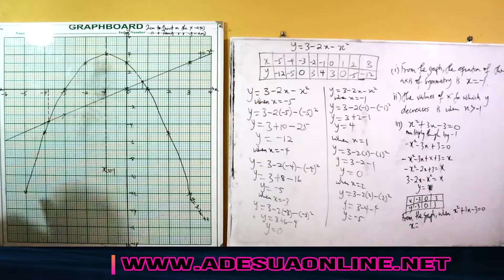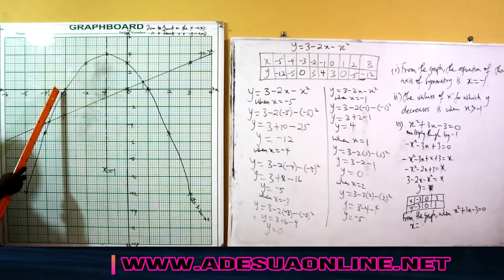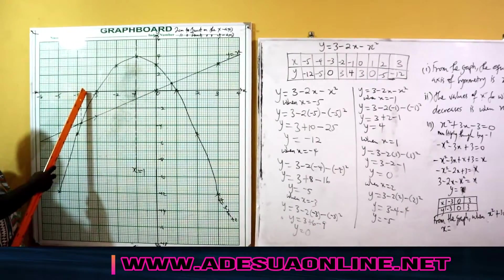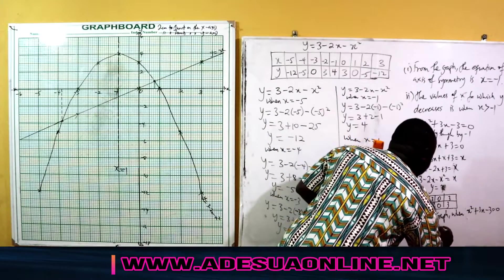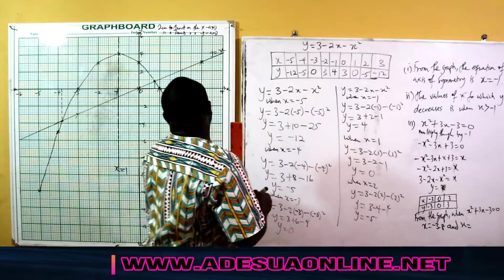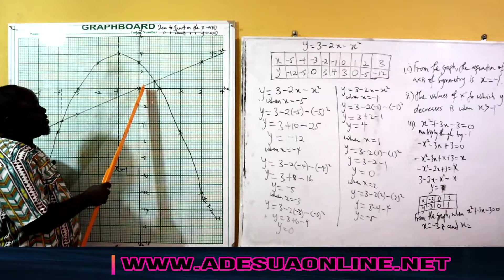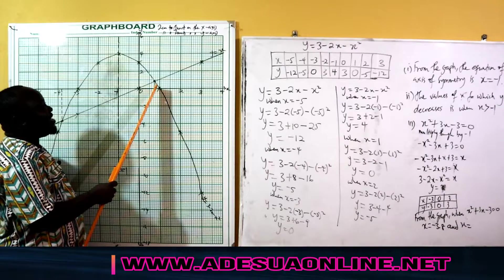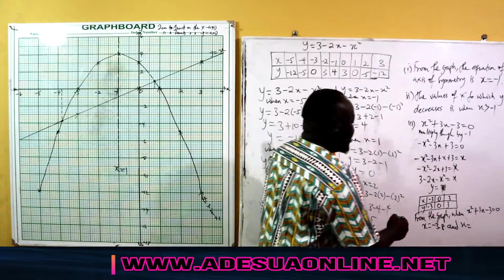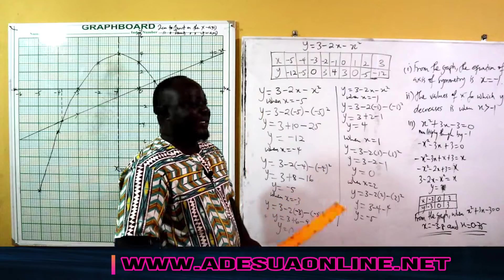From the graph, x squared plus 3x minus 3 equals 0. At the first intersection, the x value is between negative 3 and negative 4 — approximately negative 3.8. At the second intersection, x is between 0 and 1 — approximately 0.75. So x equals negative 3.8 and x equals 0.75.